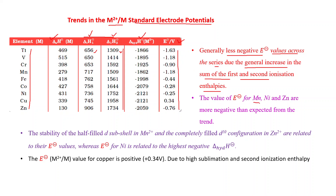However, some exceptions exist. The E° values for Mn, Ni, and Zn are more negative than expected from the general trend — Mn is −1.18, Ni is −0.25, and Zn is −0.76. But at the same time, for copper the E° value is positive.